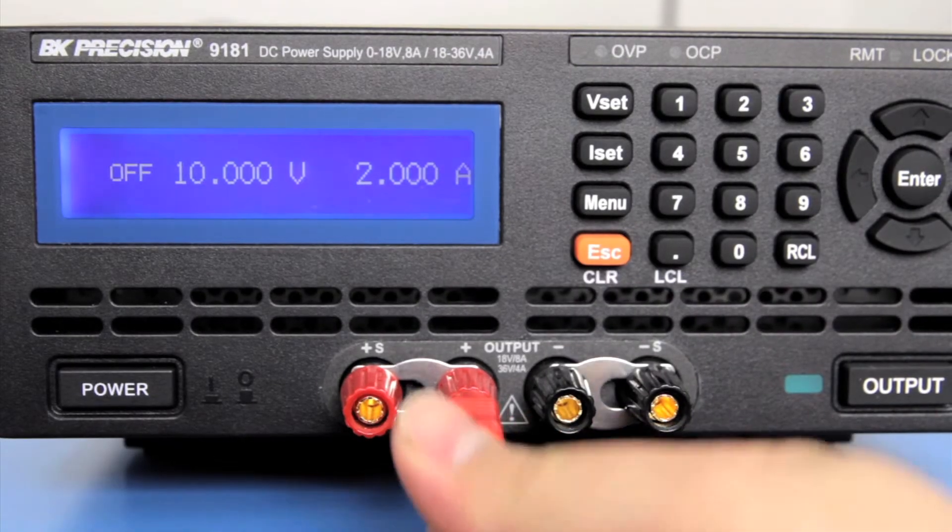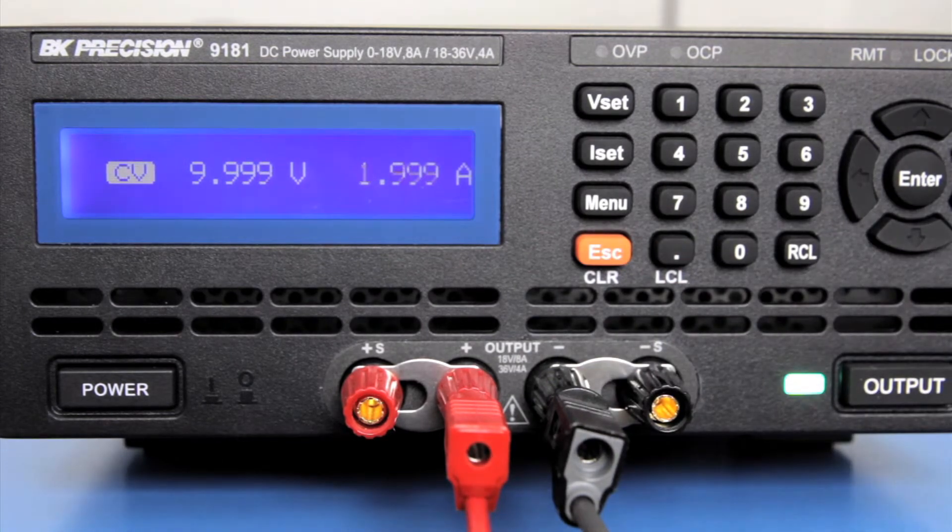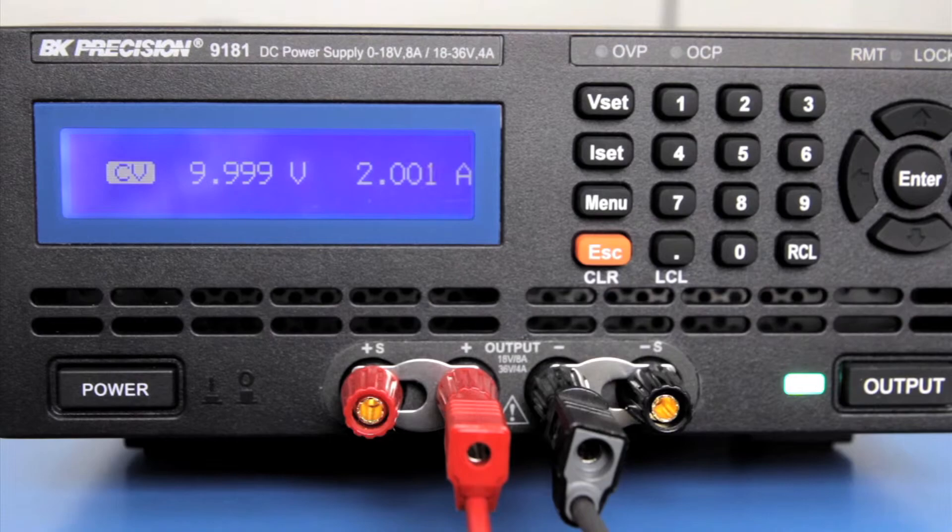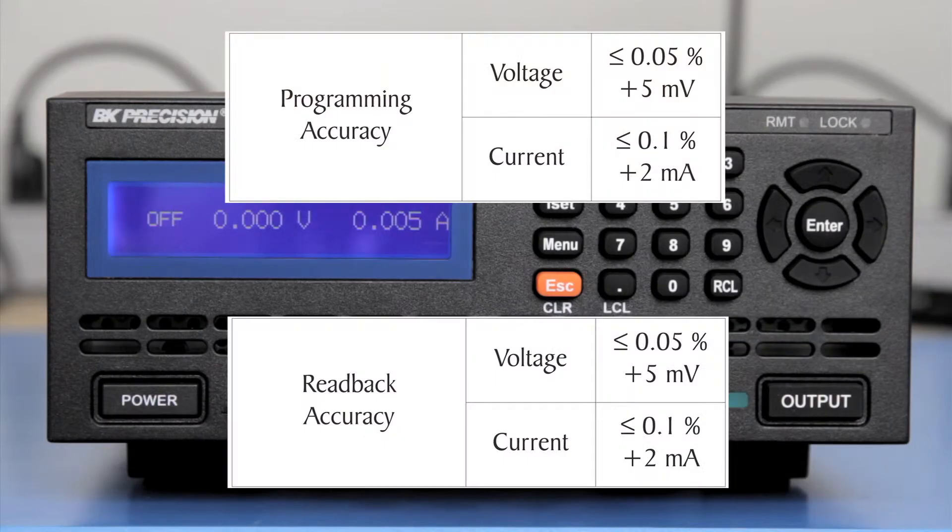The readback or meter accuracy states how close the measured values of the power supply's internal meter is to the actual output voltage and current values. It is expressed as a percentage of the output reading plus offset. In this case, the readback accuracy matches the programming accuracy. However, it can vary on other power supplies.